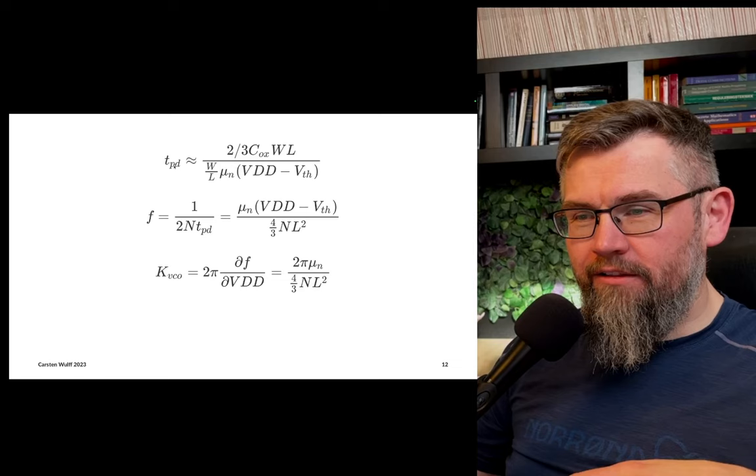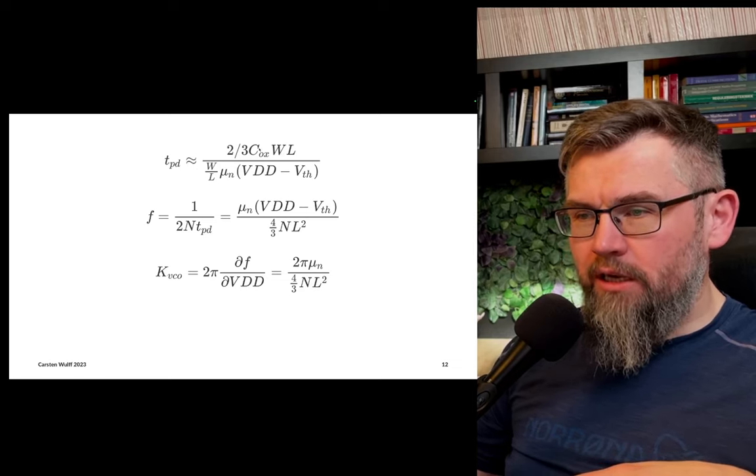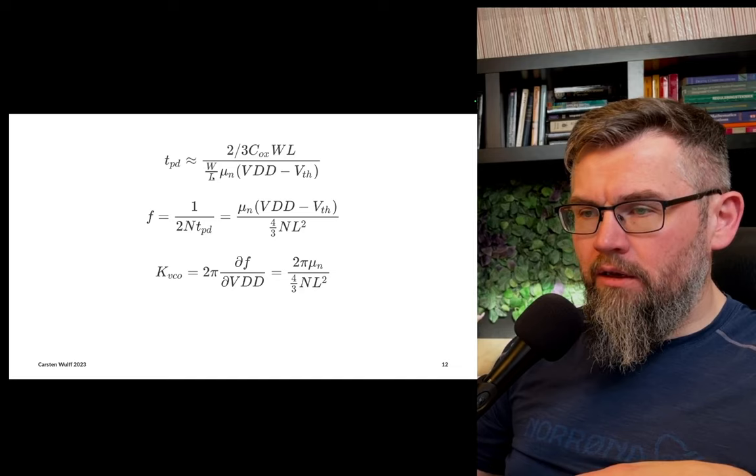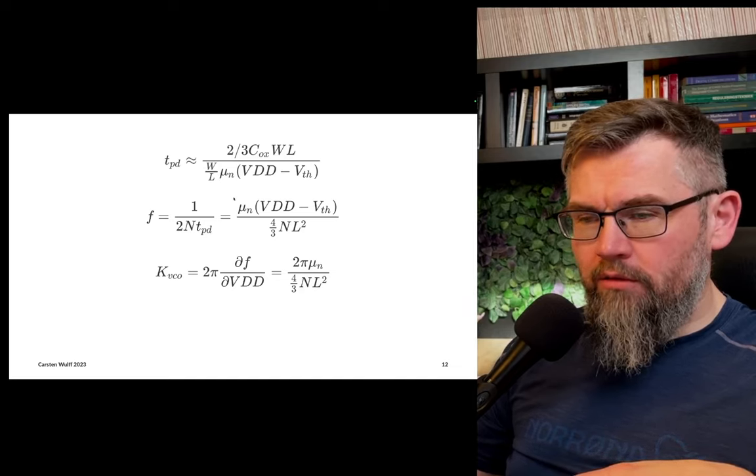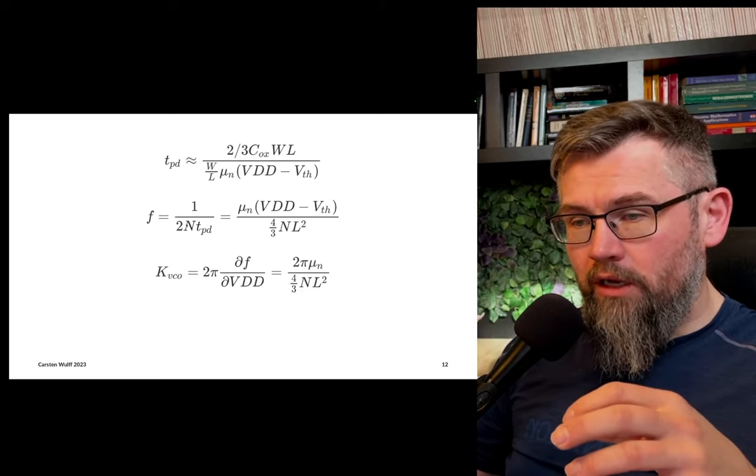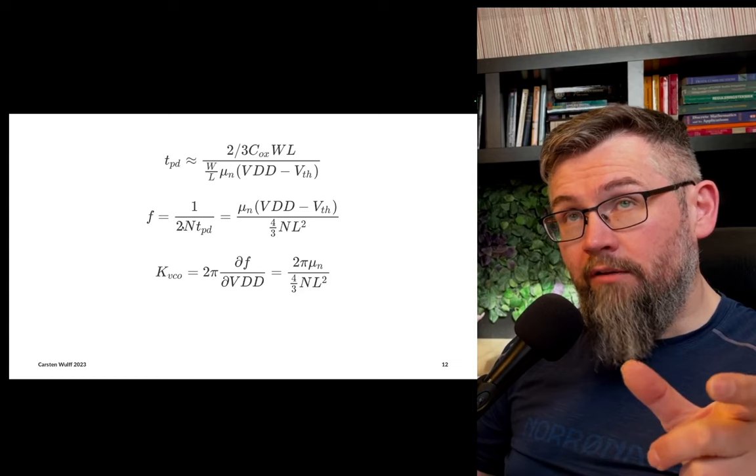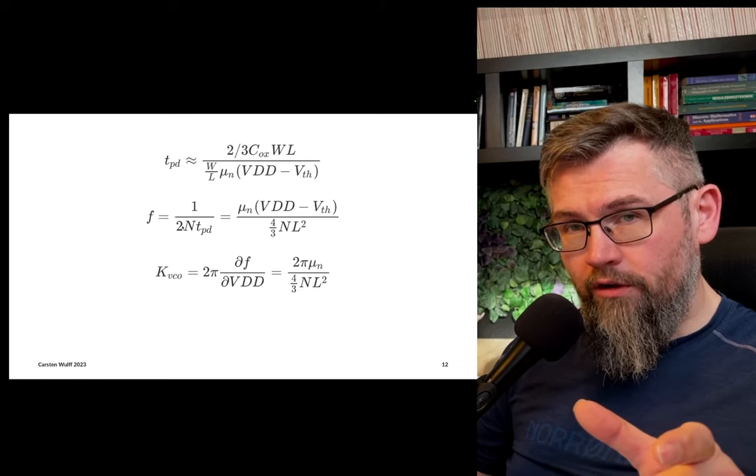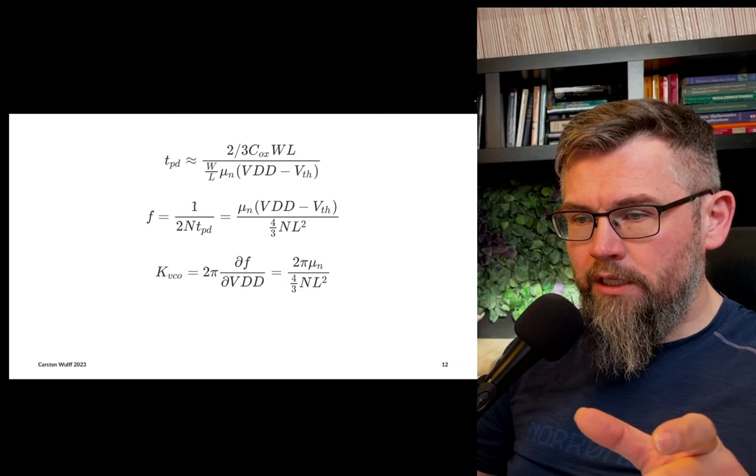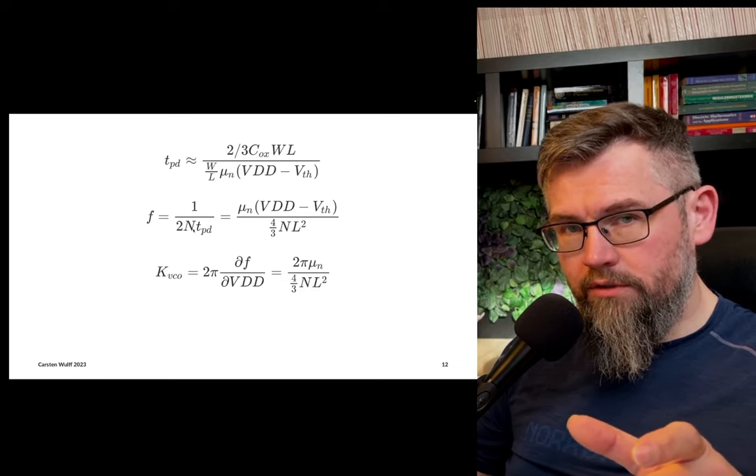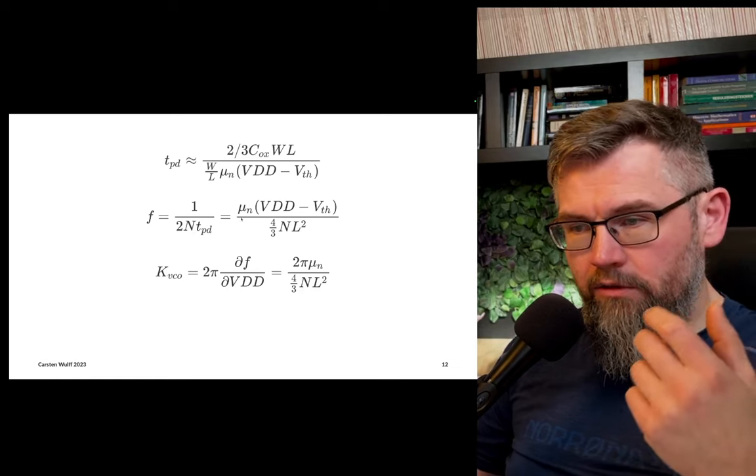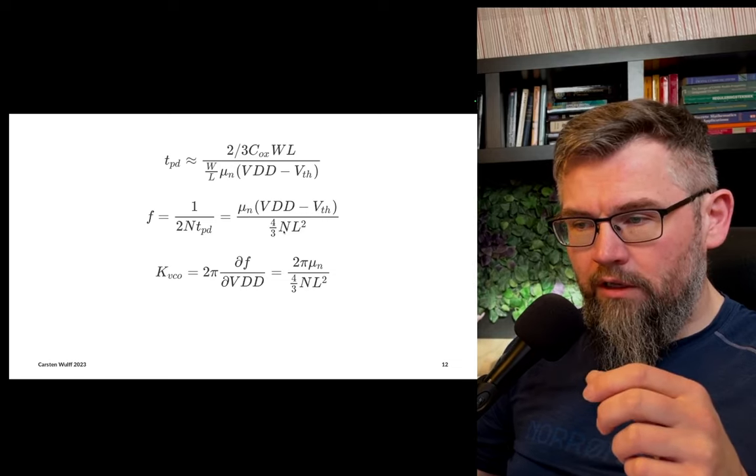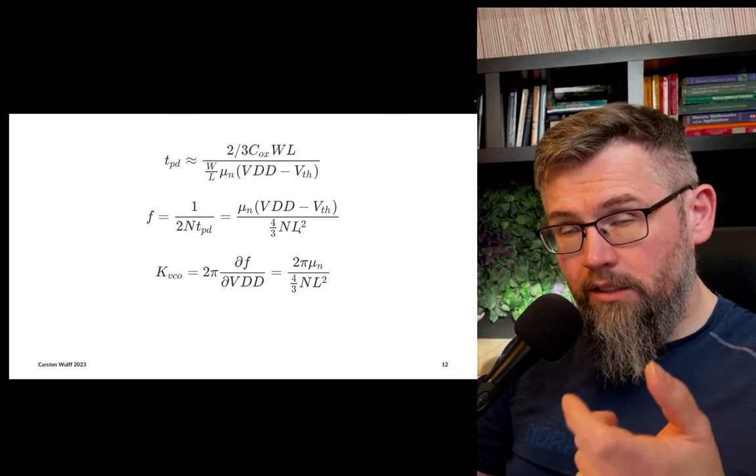For the capacitance, here I've assumed it's only the gate source capacitance that matters, so two-thirds C-ox W times L, the gate source capacitance of the next stage. That's also a gross simplification, but it's close enough. When we then calculate the delay of a single cell, we can see that we can simplify some of the variables here. W drops away and L goes into the top. If we then look at the frequency of the ring oscillator, that will be 1 over 2 - you have 180 degree phase change per inverter, so you need two inverters to get a full period - so that's 1 over 2 TPD, and then it's the number of stages.